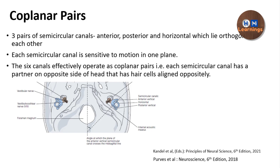The anterior semicircular canal responds to motion of the head in the anterior plane, the posterior one responds to the posterior plane, and the horizontal one responds to motion of the head in the horizontal plane. All these canals are lying 90 degrees to each other.